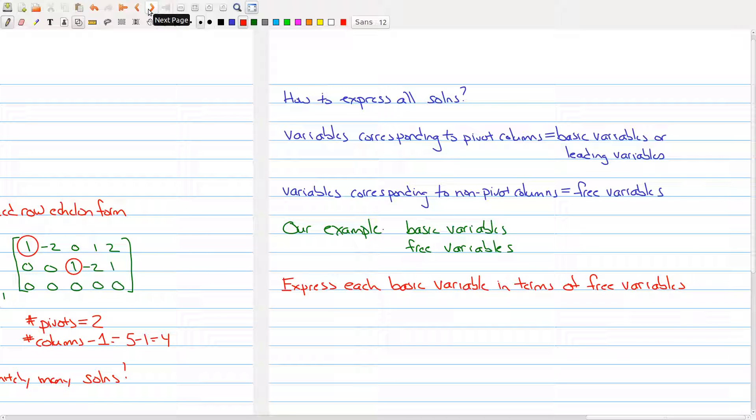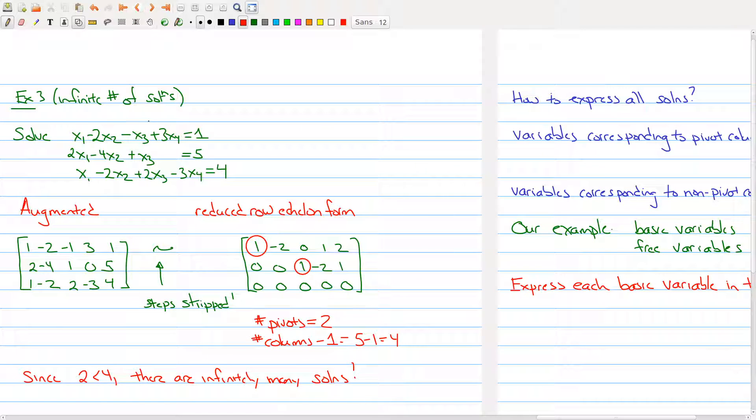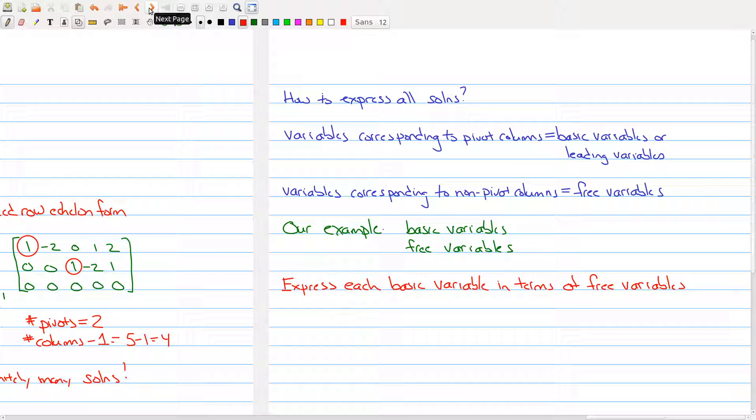So to move forward, we introduce a little bit more terminology. And what we want to do is we want to classify the variables that show up in our system of linear equations. So let's just go back here a page. So we have a system equation in four variables, x1, x2, x3, and x4. And what we want to do is we want to just categorize the type of variables that we have.